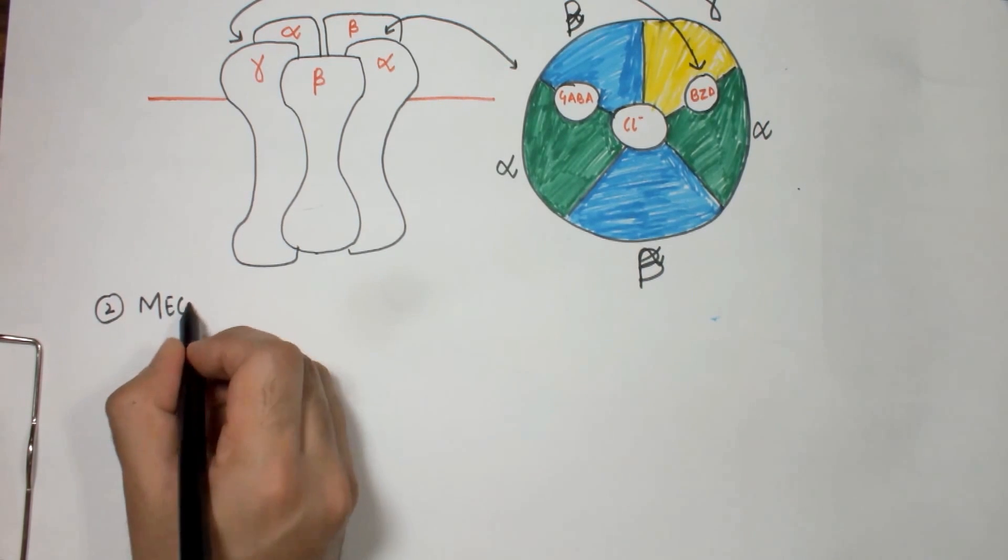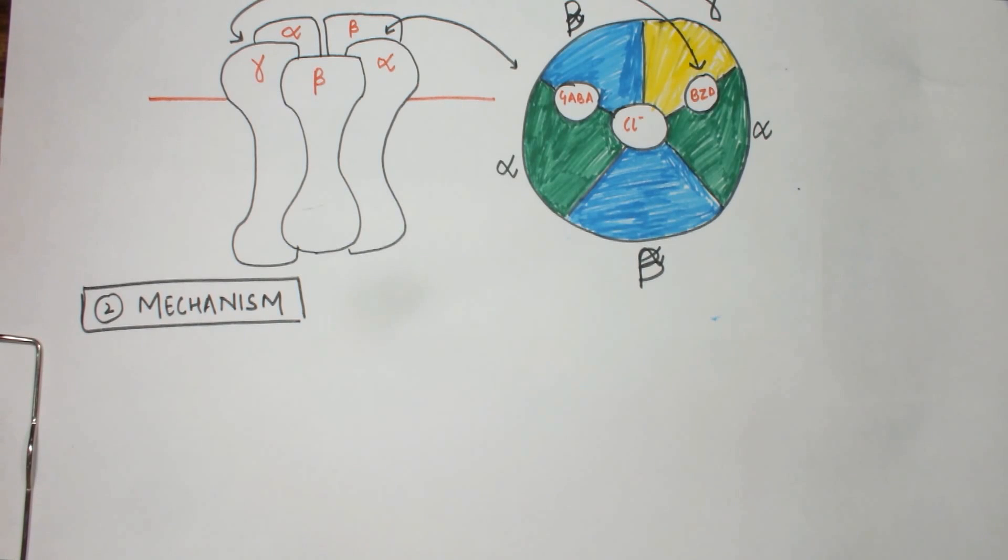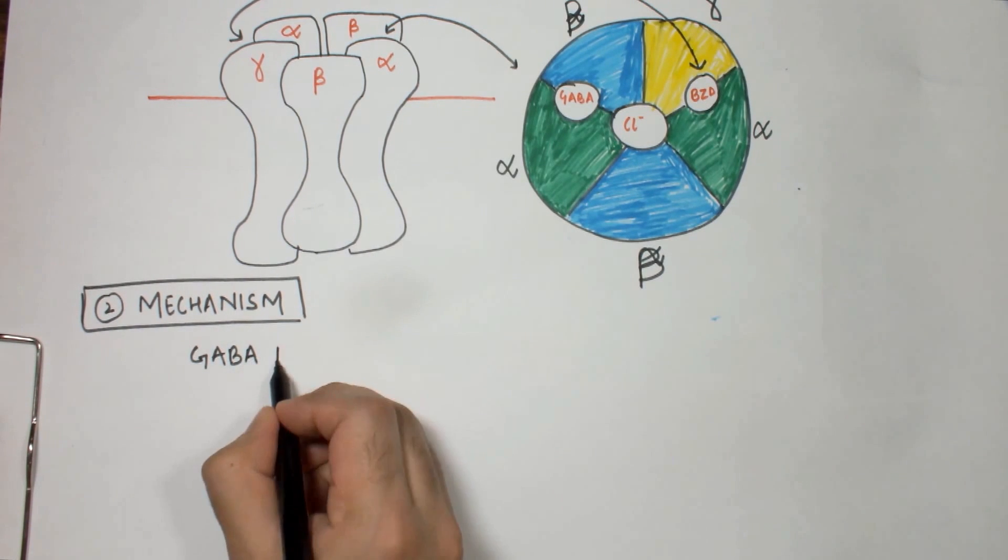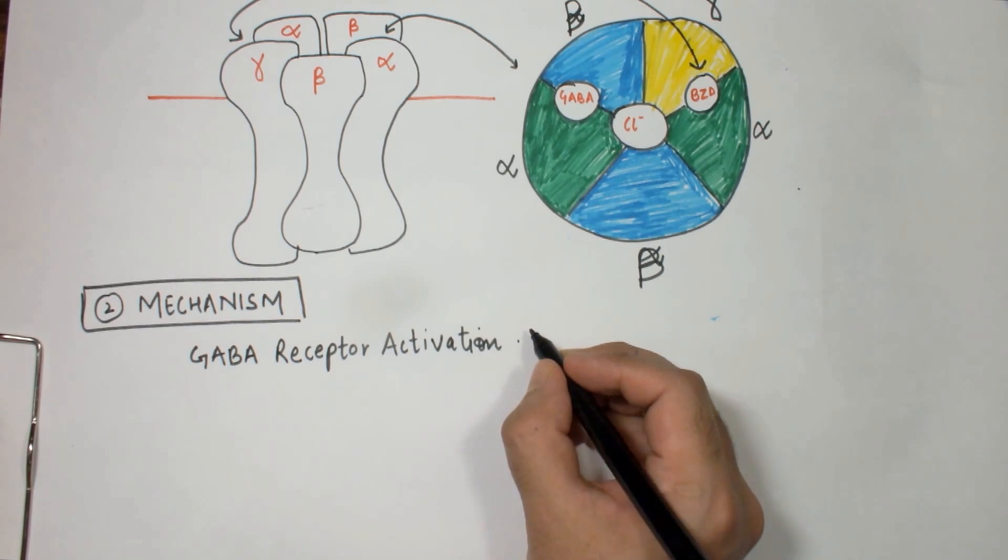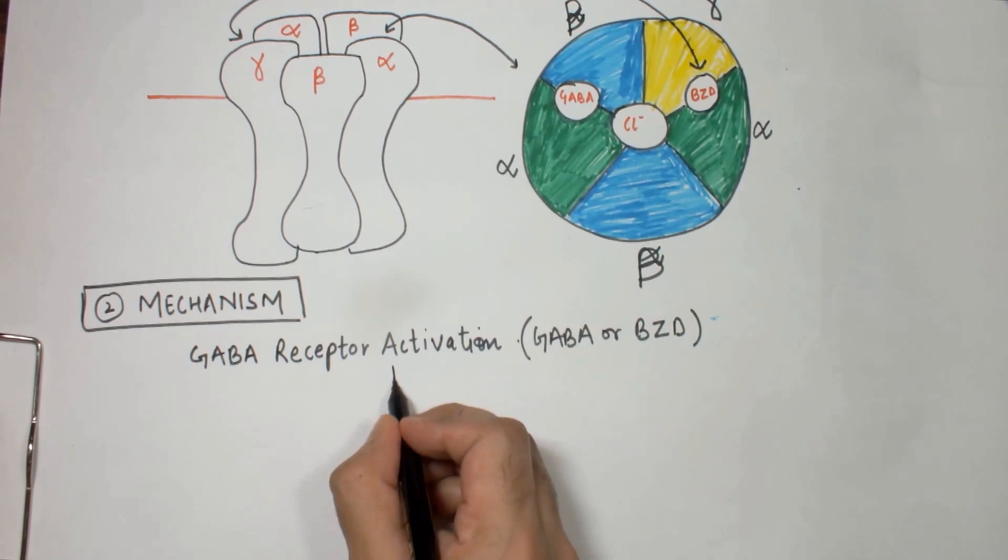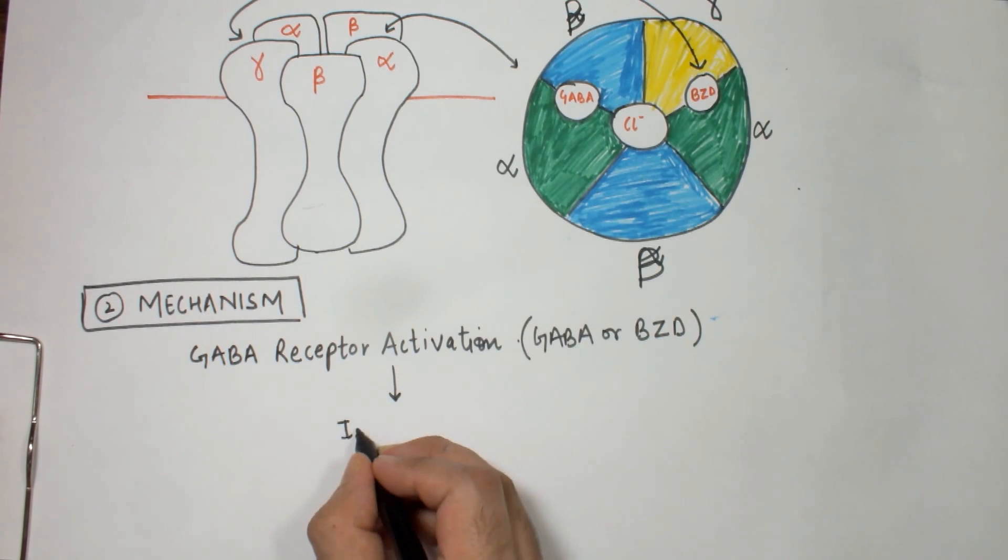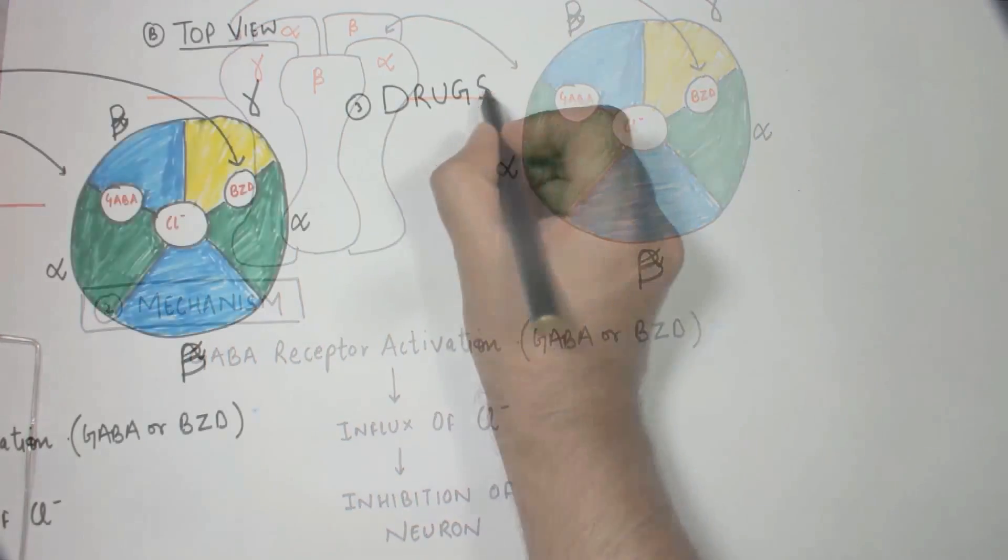Now the next important thing I would like to discuss is the mechanism of action of this GABA receptor. The basic step involved in the activation of the GABA receptor is binding of a ligand or drug to the GABA site or the benzodiazepine binding site. Due to this binding, the central chloride pore opens up and causes influx of chloride ions, which further causes inhibition of the neuron by creating a state of hyperpolarization in the neuron.